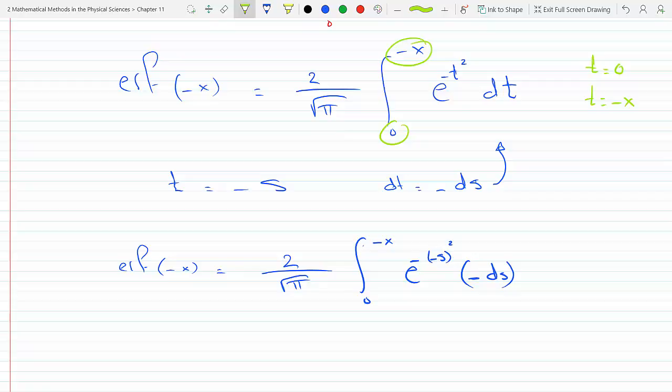So here this is not entirely correct, let's change the bounds. When t is zero, clearly s is zero so this doesn't change. And when t is minus x, then s would be minus t, so then s becomes x, so now this came back to x as you can see.